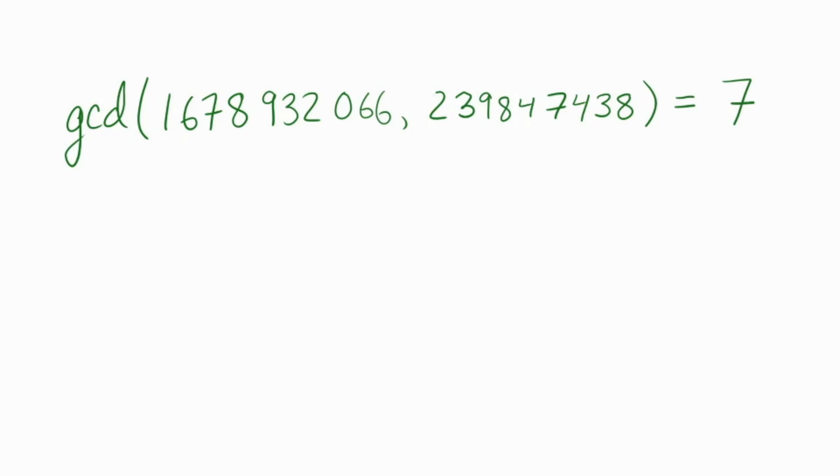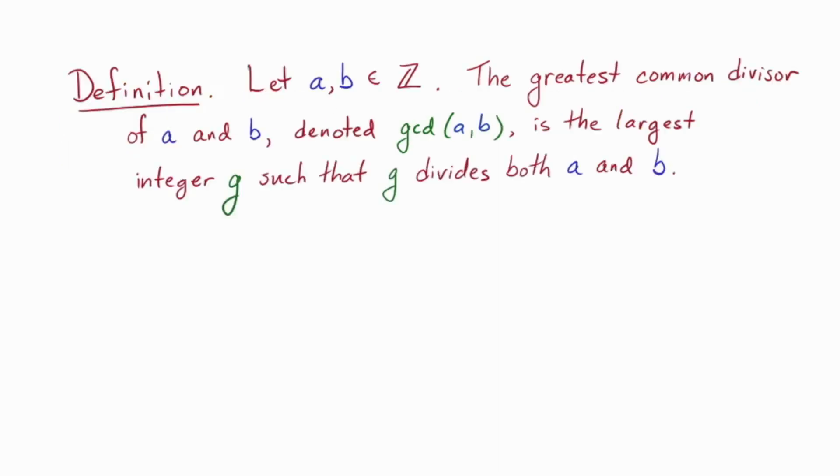Before we move on, let's figure out what the formal definition of the gcd needs to be. We could state it in terms of the factorizations above, but that depends on a whole lot of background about primes and such like. Even though it's the best for intuition, we prefer for the definition to depend on as little previous knowledge as possible. So, we say the following. Definition. Let a and b be integers. Then the greatest common divisor of a and b, denoted gcd of a and b, is the largest integer g, such that g divides both a and b.